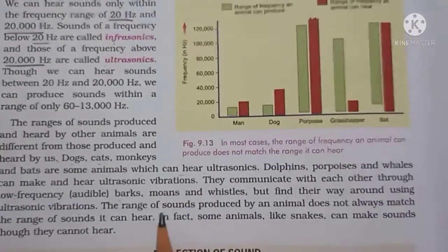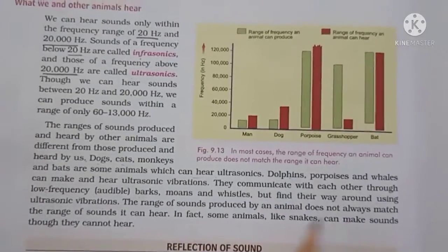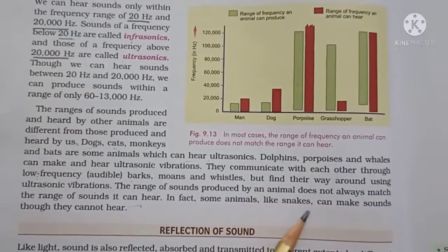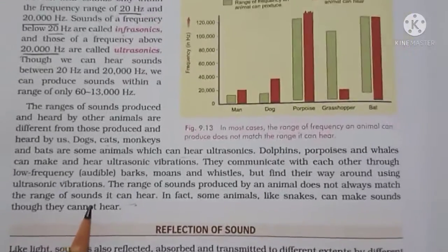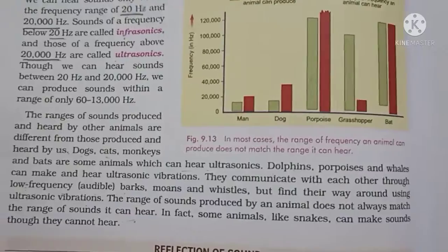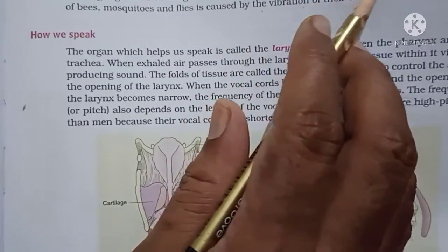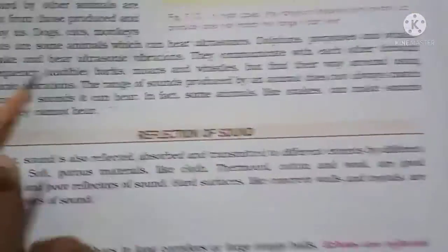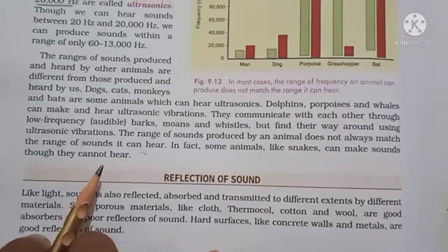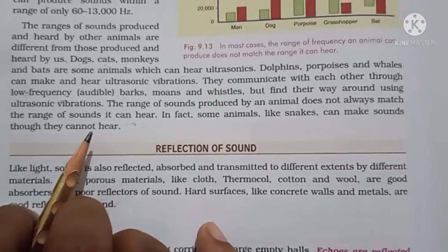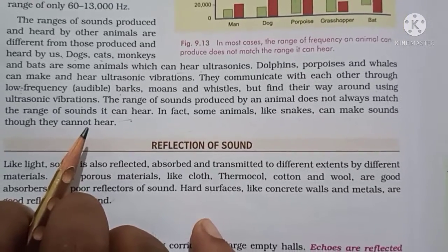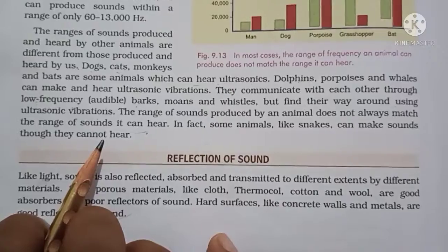In fact, some animals like snakes can make sound through their mouth by forcing air out — as we have seen, snakes hiss. But they do not have ears and cannot hear any sound. Although snakes can produce sound by forcing air out of their mouth — we call it the hissing sound — snakes do not have ears and cannot hear sound.